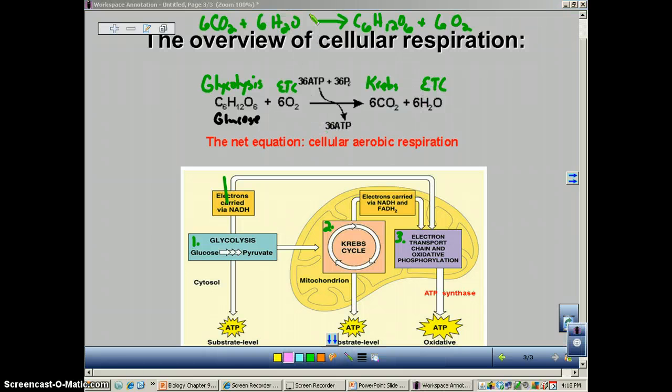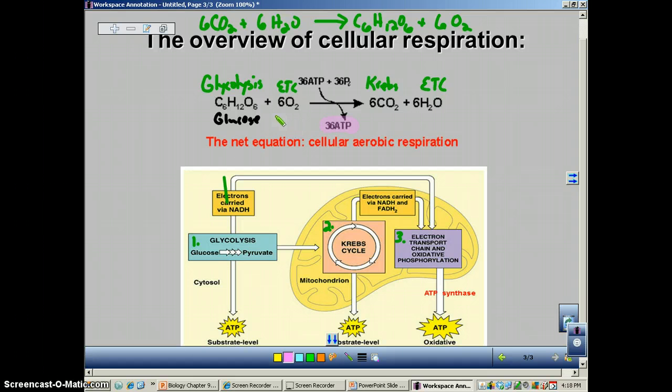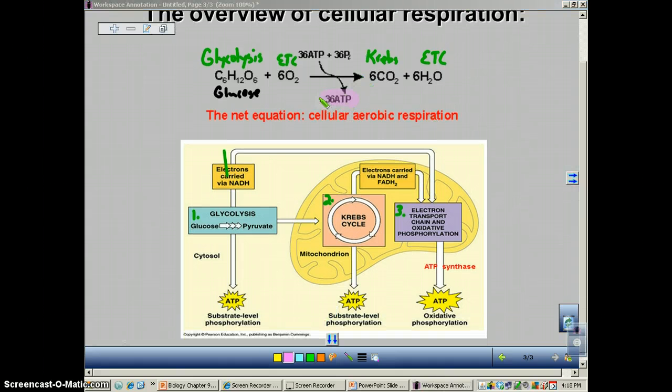Why do we even go through all this? You get to make 36 ATP per glucose molecule doing cellular respiration. It's extremely important that you get that number down. 36 ATP.